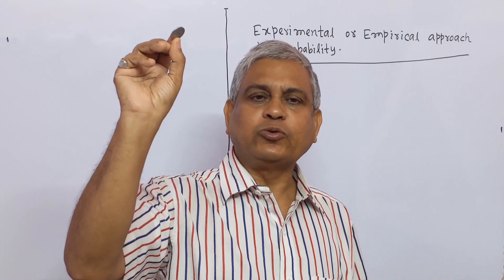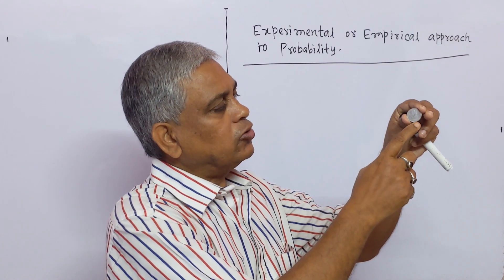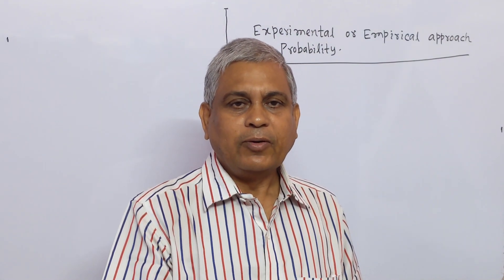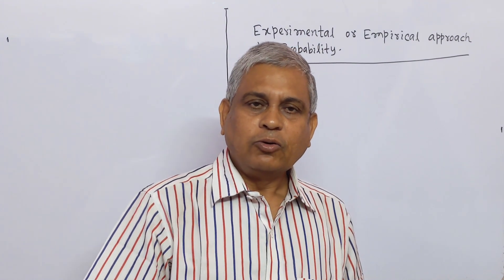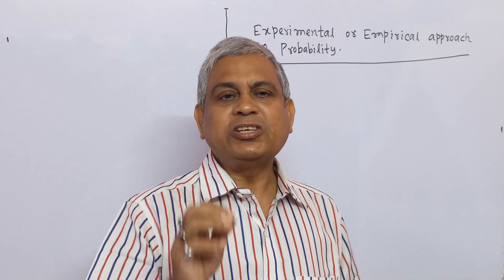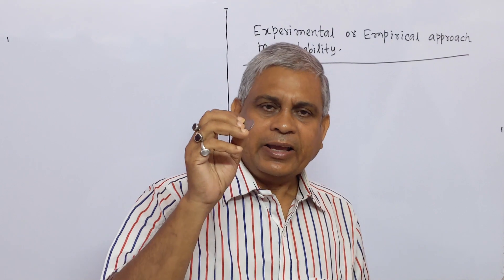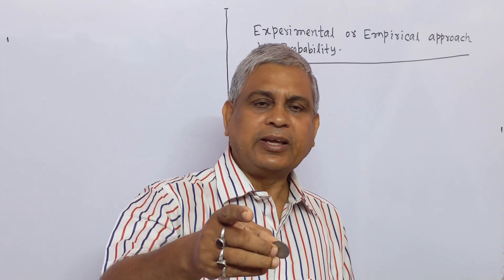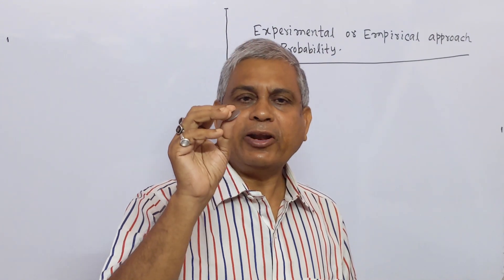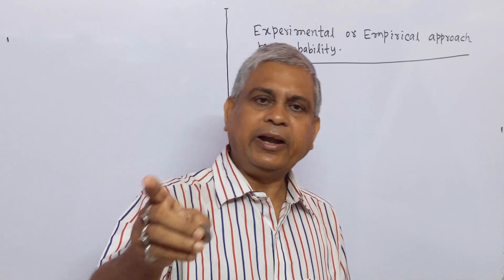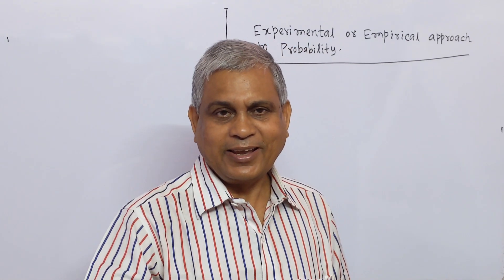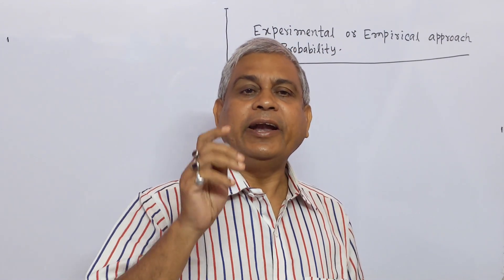This coin has two sides. One side is called head and the other side is called tail. If we do an experiment by tossing this coin, we cannot predict which side will appear — head or tail. Here we get two types of outcomes: head or tail. And we cannot predict the outcome in advance. This type of experiment is called a random experiment.